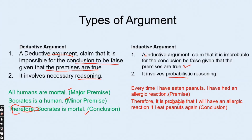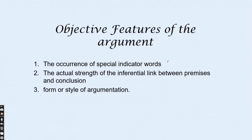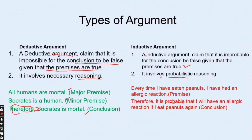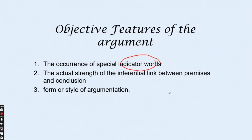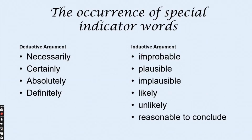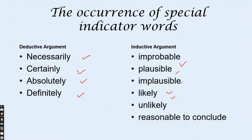How can we identify a deductive or inductive argument? It can be understood on the basis of indicator words, the strength of the inferential link between premise and conclusion, and the style or form of the argument. Indicators like 'necessarily,' 'certainly,' 'absolutely,' 'definitely' suggest a deductive argument, while words like 'probable,' 'possible,' 'likely,' 'unlikely,' 'reasonable to conclude' suggest an inductive argument.